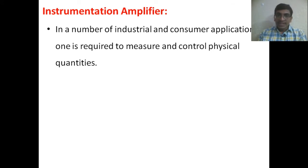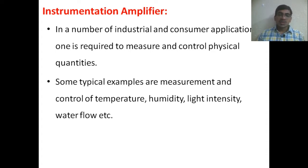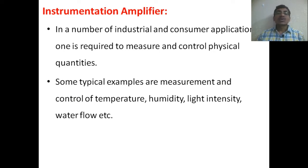This conversion is done using a transducer. A transducer is a device which converts a physical quantity into an electrical quantity. Physical quantities like weight, temperature, and pressure can be converted into electrical quantities using a transducer. Typical examples include measurement and control of temperature, humidity, light intensity, water flow, etc.